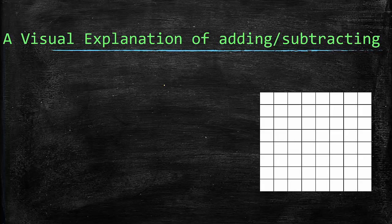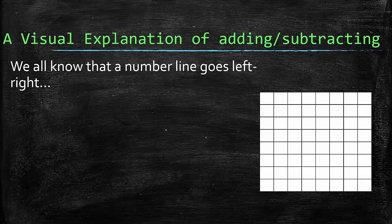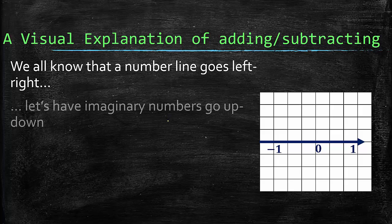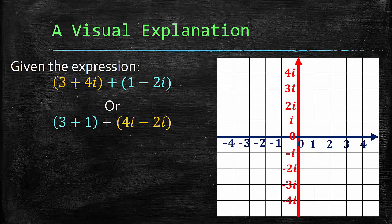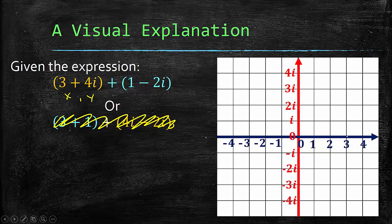Here's a visual explanation of adding and subtracting. A number line goes left to right. Imagine that your imaginary numbers go up and down. So now it kind of looks like a coordinate plane. If I gave you this right here, you could think of this as like an x-coordinate and a y-coordinate. So we'd have 3 and then 4i, which would be right there. Then we would be adding 1 minus 2i. So you add your constants together and your imaginary numbers together. 3 plus 1 is 4, so we'd be going further to the right. And then we'd be subtracting 2i, so we'd be going down. And that would be kind of our new spot of 4 plus 2i.